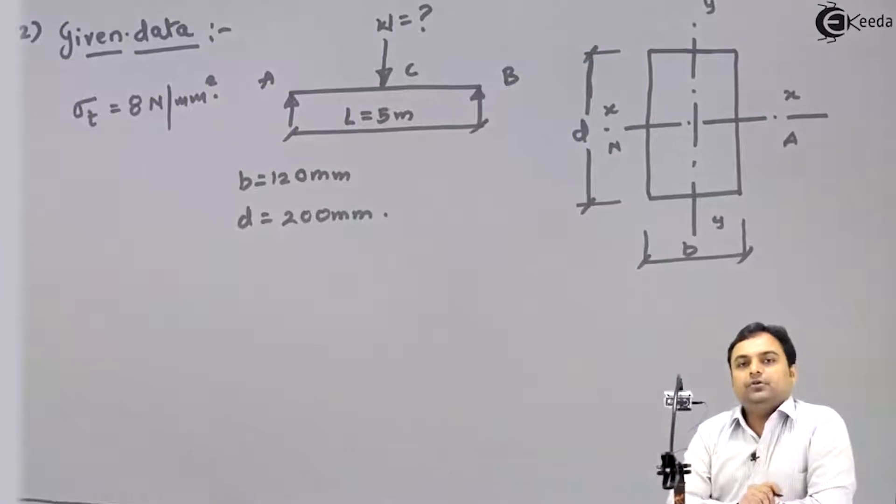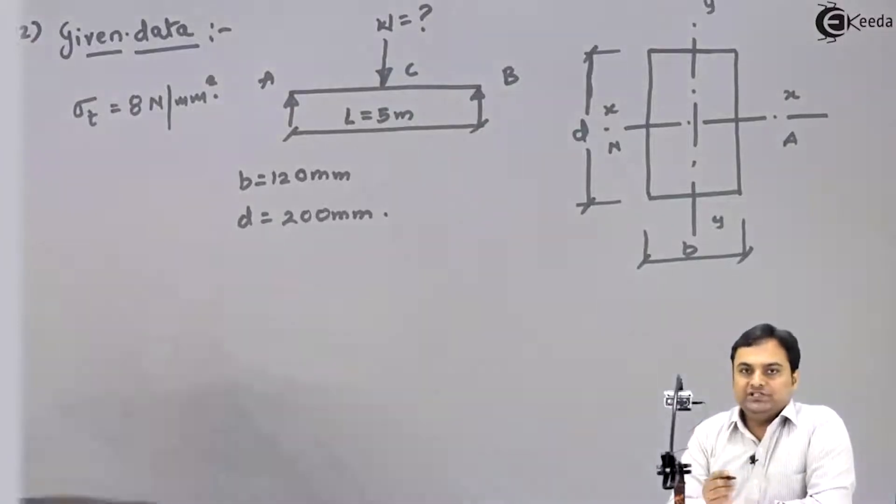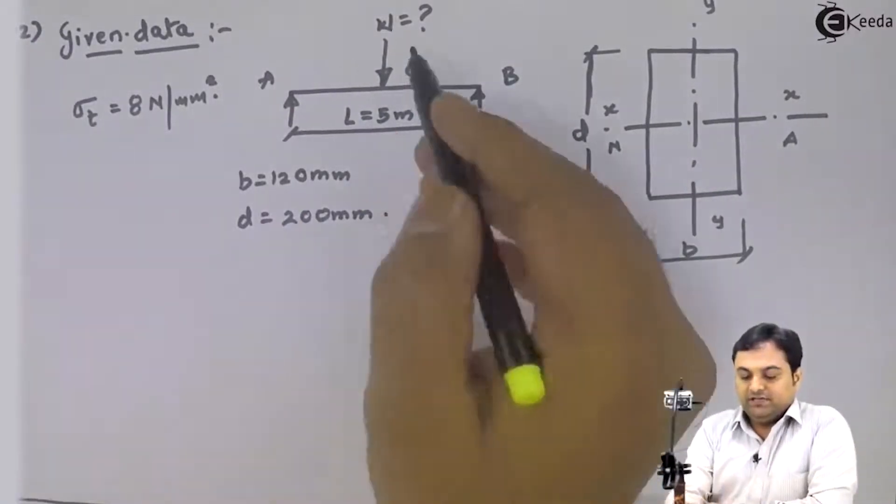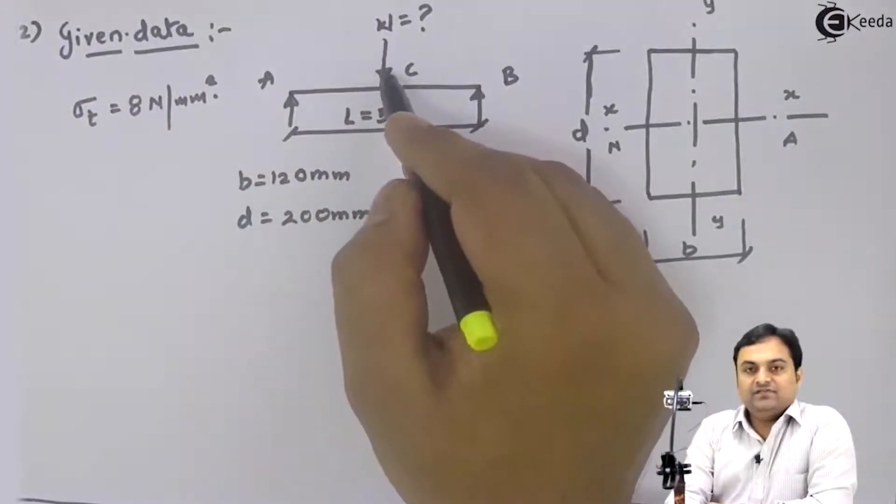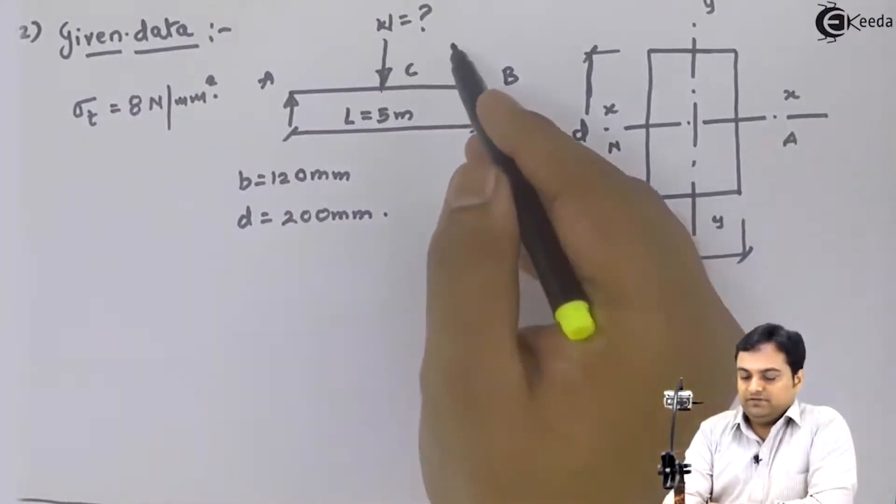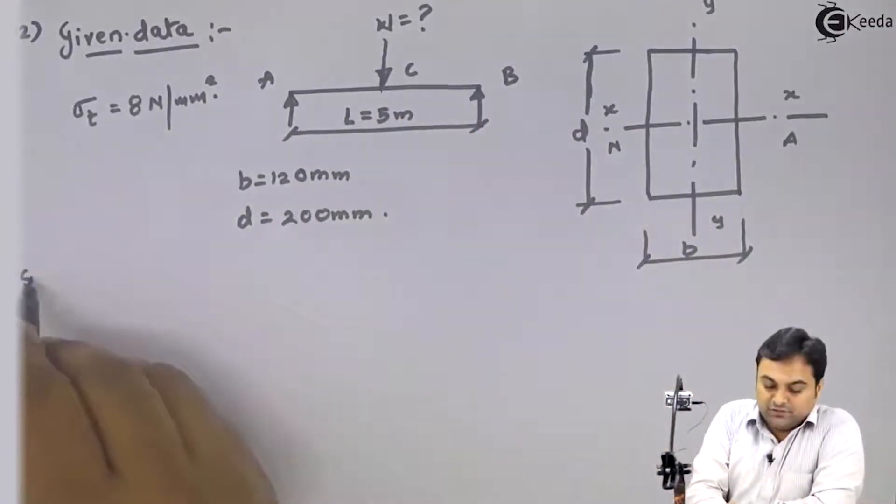If you compare it with the previous problem, in the previous problem there was a cantilever beam and the load was at the free end. Here we are having a simply supported beam and load is exactly at the half. So the concept remains same, just the type of the beam has changed.